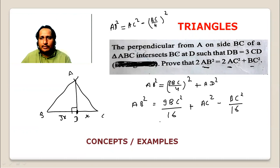So what remains - BC, BC terms. So 2AB² is equal to BC² plus 2AC².